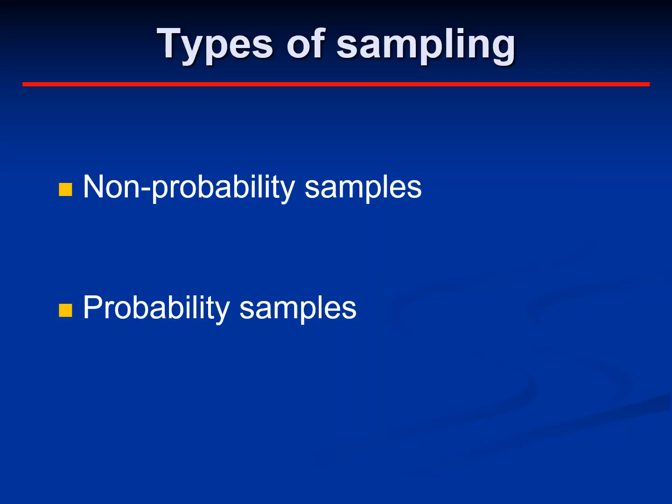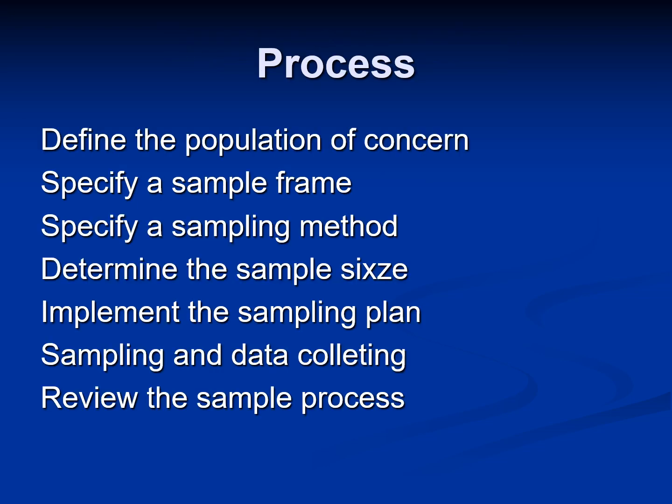There are two types of sampling: non-probability sampling and probability sampling. The process of getting samples involves first defining a population, then specifying a sampling frame, specifying a sampling method, determining sample size, implementing the sampling plan, and eventually collecting the data and reviewing the sample process.